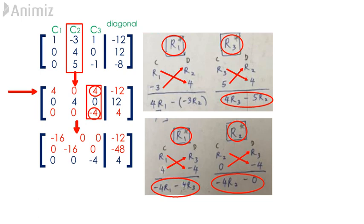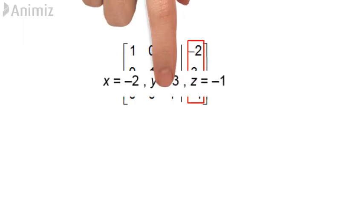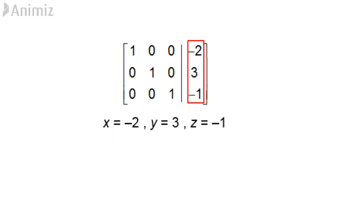For the fourth and final step, we refer to the matrix diagonal. We divide each row by the diagonal element to create an identity matrix on the left. Row 1 is divided by negative 16, row 2 is divided by negative 16, and row 3 is divided by negative 4. The matrix obtained on the right-hand side of the augmented system gives us x, y, and z. Therefore, x equals negative 2, y equals 3, and z equals negative 1.